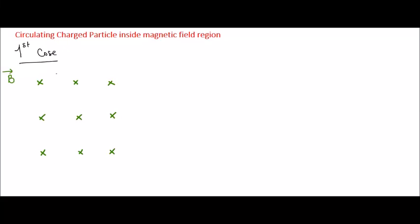Hi, everybody. Today we will talk about circulating charged particles inside the magnetic field region. We assume that there is a region with a uniform magnetic field, and in the first case we will assume that we have a charged particle Q, and the velocity vector is perpendicular to B.